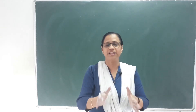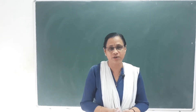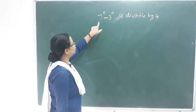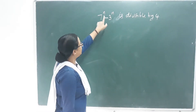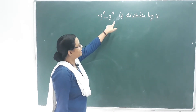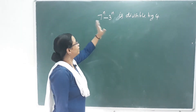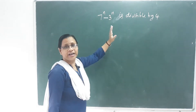We will do multiplication. Consider the statement: 7 raised to n minus 3 raised to n is divisible by 4. Prove the statement using mathematical induction.